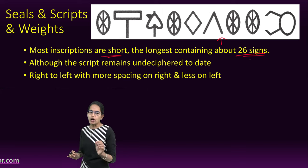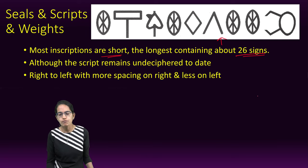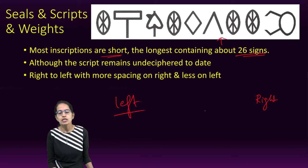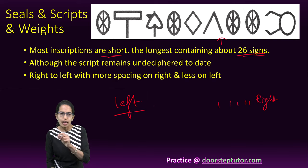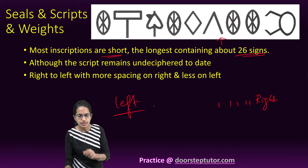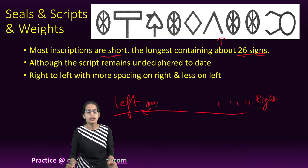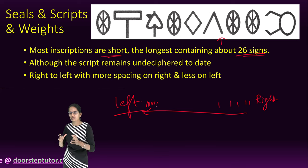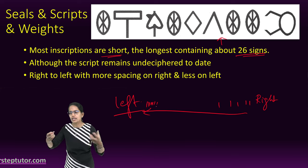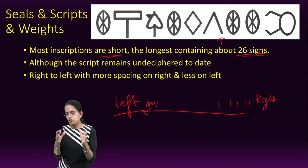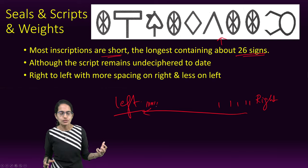One thing is very clear about the Harappan script: it was written from right to left. Another interesting observation is that on the right side the signs were spaced apart, but as the writer moved from right to left, the signs came closer together, indicating a lack of space — resulting in visible cramping on the left side.